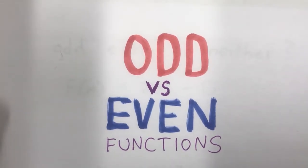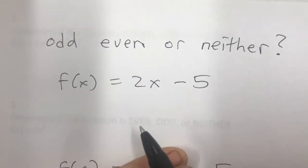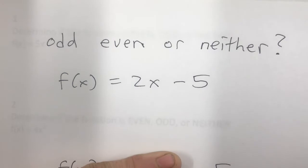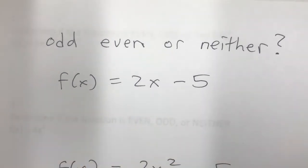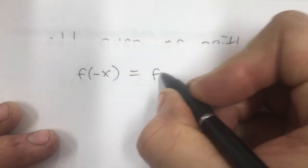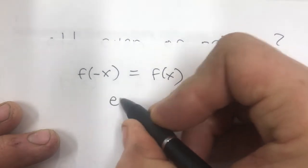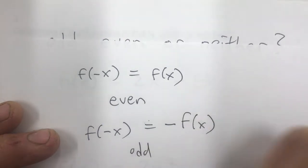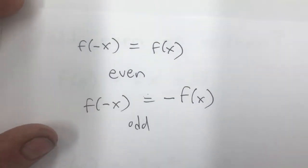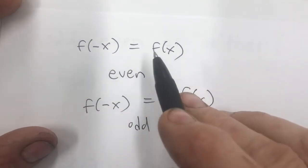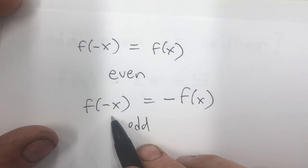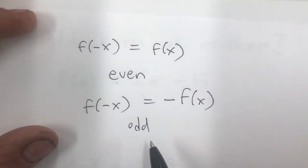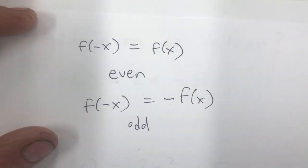We're looking at odd versus even functions today. To tell if a function is odd or even, you do f of negative x. If f(-x) equals f(x), it's even. If f(-x) gives you the opposite of f(x), it's odd. If you put negative x in for x and you get the same exact function, it's even; if you get the opposite, it's odd. If you don't get either one, it's neither.